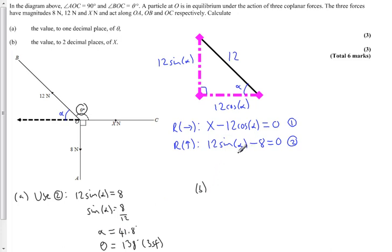we now know the answer of alpha, which we can put in here. So we know that x is equal to 12 cosine alpha. We now know the answer of alpha. We'll put the full answer in from our calculator. And we find out that x is equal to 8.94 newtons to three significant figures. And there we are. We're done.